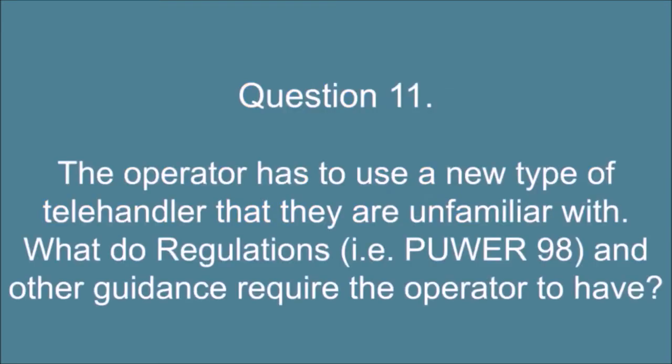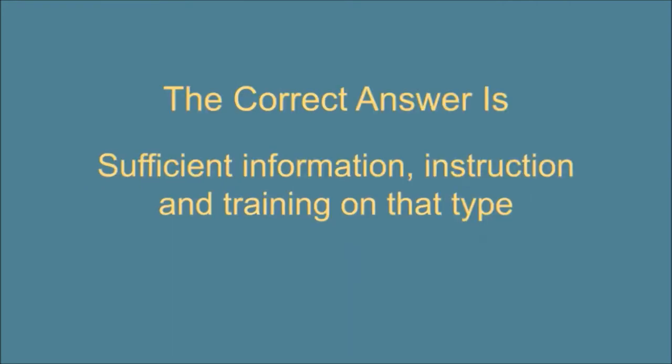Question 11. The operator has to use a new type of telehandler that they are unfamiliar with. What do regulations, i.e. PUWER 98, and other guidance require the operator to have? The correct answer is: Sufficient information, instruction, and training on that type.